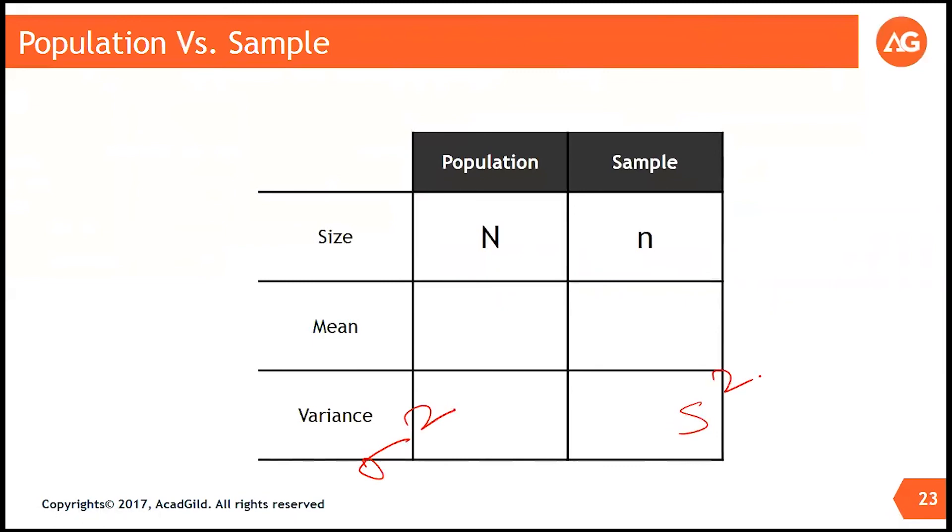When we calculate population variance, we divide by n. Summation, all the data values, xi minus mu, the whole square divided by n.